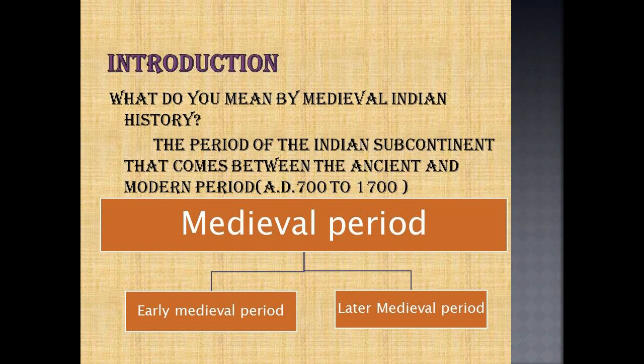What do you mean by medieval Indian history? The period of the Indian subcontinent that comes between the ancient and the modern period — that is, it starts from 780 to 1780 AD. Historians divide the medieval period into the early medieval period and the later medieval period.